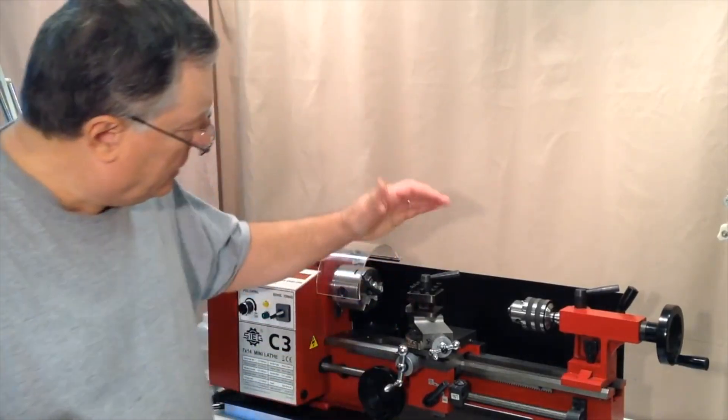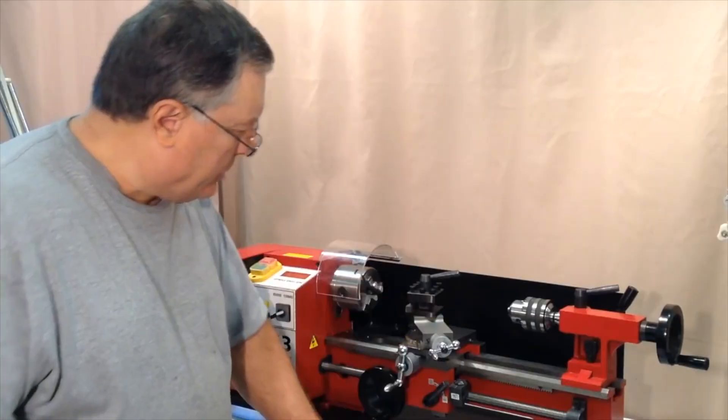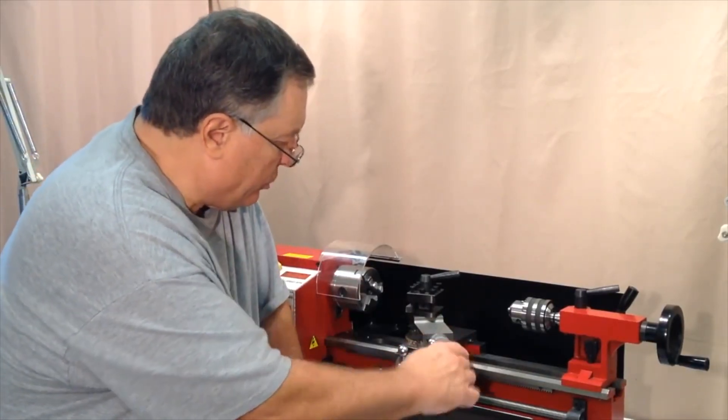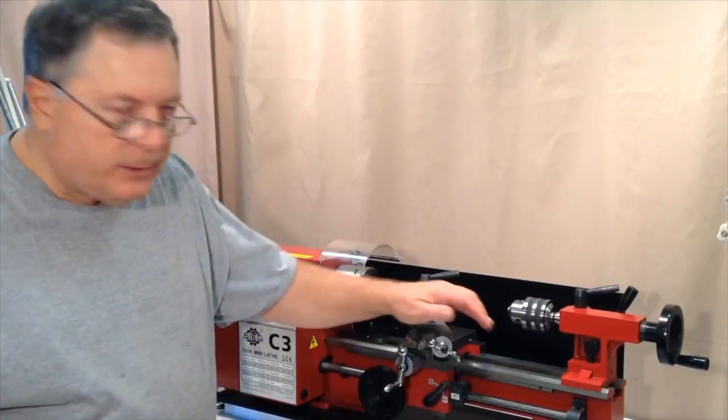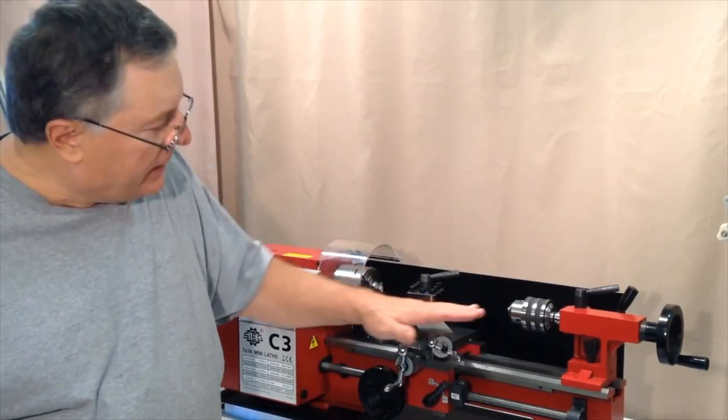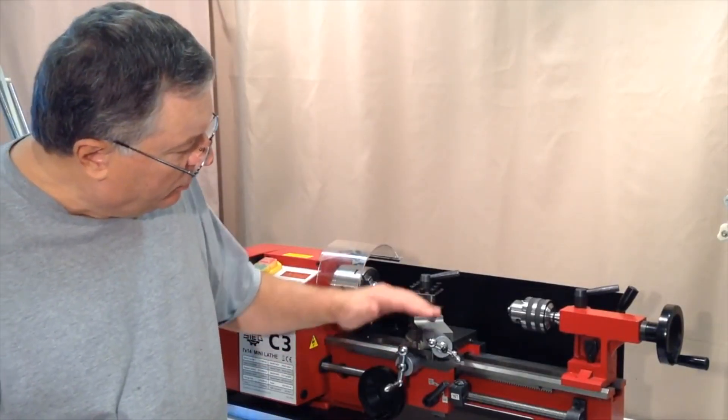Today we're going to look at adjusting the compound and the cross slide. As they come from the factory they're sometimes not optimal, and they're actually one of the most important adjustments you can make on the mini lathe. If you have them adjusted properly you should get pretty smooth and even movement in and out.